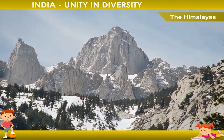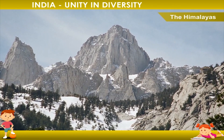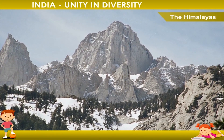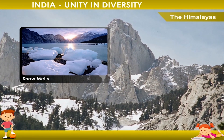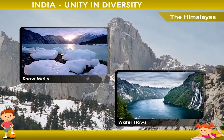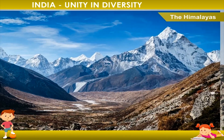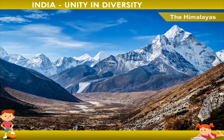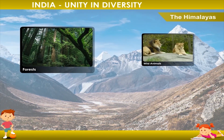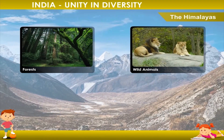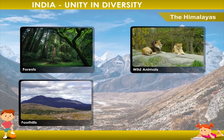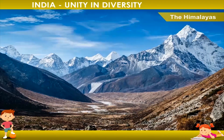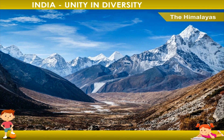The Himachal lies to the south of the Great Himalaya. This is the lower range of mountains. The snow melts during summer and the water flows into the river. Shivalik Hills are present further south and are lower in height. The slopes have thick forests and are full of wild animals. The foothills of the Shivaliks are called the Terai.